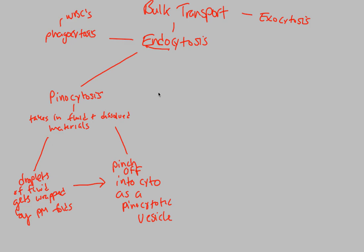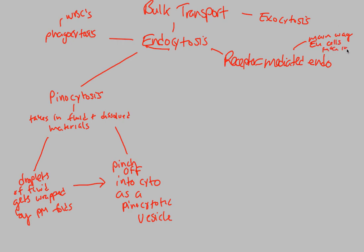The last type of endocytosis we'll look at is called receptor-mediated endocytosis. As a side note, this is actually the main way eukaryotic cells take in things. So receptor-mediated endocytosis is the primary mechanism by which eukaryotic cells are going to take in material. Let's look at this process step by step.